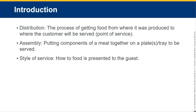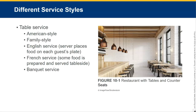Assembly would be putting the components of a meal together on a plate or tray to be served. So it's taking the mashed potatoes, the meatloaf, the roll, and physically putting those components together — or assembling them. Then the style of service is how to present the food to the guests. We have different types of table service.